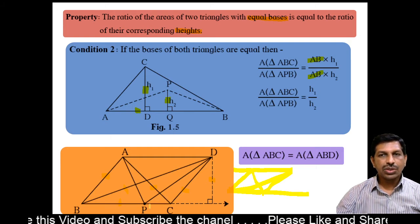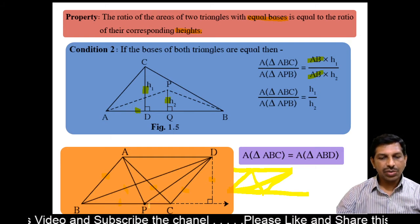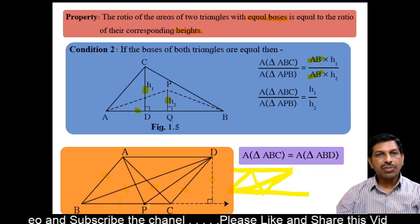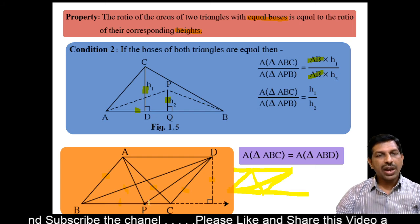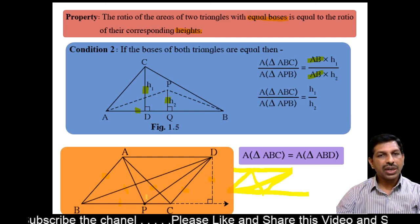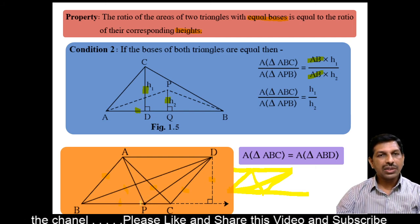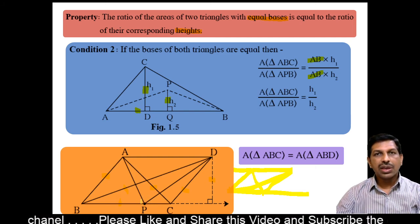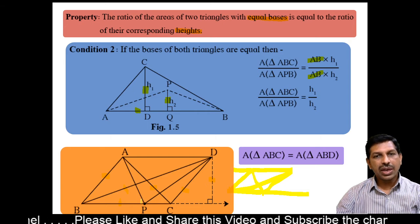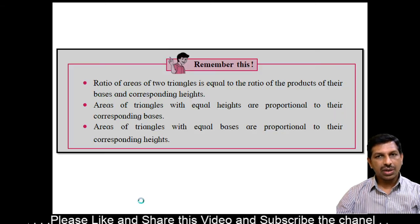So if the base and height of the triangles are equal, then the triangles have equal areas.